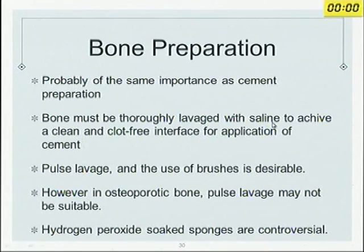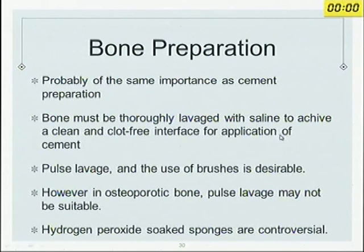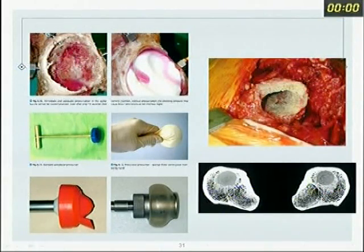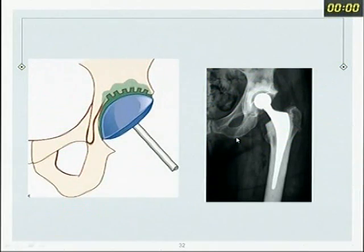Bone preparation is extremely important. The bone is thoroughly lavaged — pulsatile lavage and the use of brushes is recommended. However, in osteoporotic bone, be careful — do not do pulsatile lavage, especially in rheumatoids. You can use epinephrine sponges — though risky in older patients — or hydrogen peroxide gauzes, though that is also controversial. The bone should look white, clean, and devoid of clot so that your cement can interdigitate well, and you should be able to pressurize the cement in.